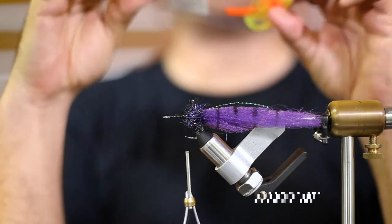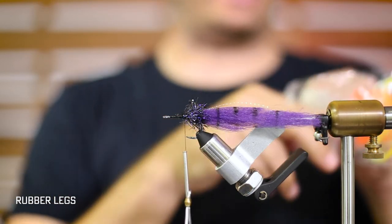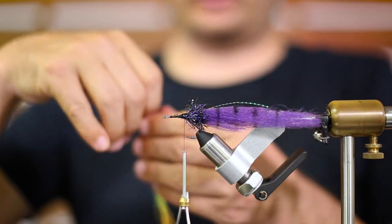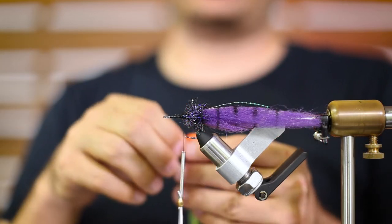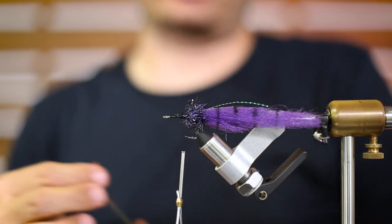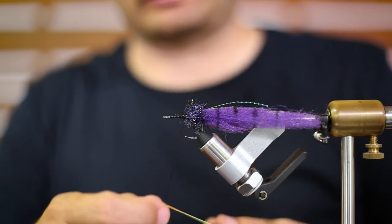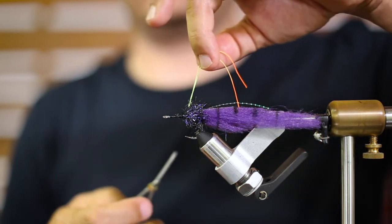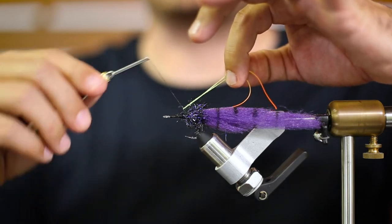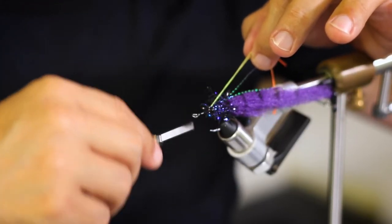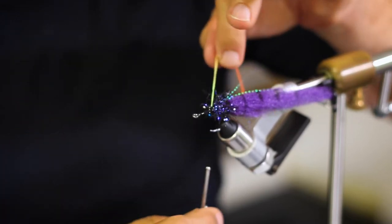I'm going to go with these silicone legs, just because they add a pop of color. You can use whatever you have. But this particular color pattern against the purple and black I think looks really good on the gurgler. I'm just going to fold it across the thread. This one I want to go one leg on each side. Keep it from fouling but also just kind of make it look a little more balanced.